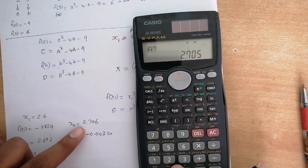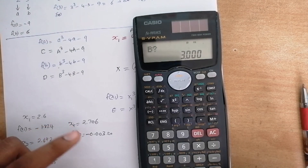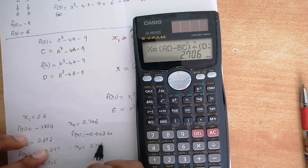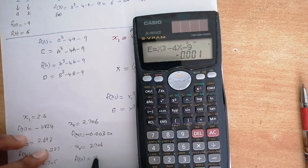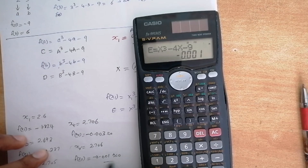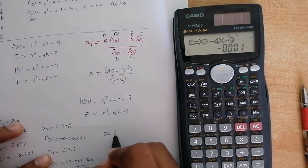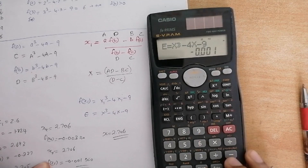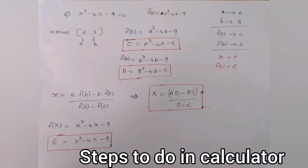We do one more iteration: replace a with 2.706. We get the new x₅ = 2.706, and f(x₅) = -0.001, which is almost equal to 0. So the value of x after the Regula Falsi method, after 5 iterations, is 2.706. This is how we can solve it on a calculator using the Regula Falsi method.